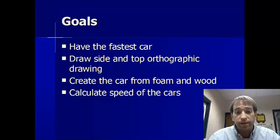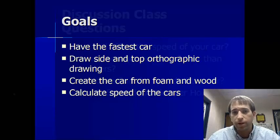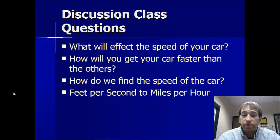We're going to do some science and some math with this. So the math part will be where you calculate the speed of the car. Some things we're going to discuss in class: What will affect the speed of your car? How will you get your car faster than the others? Because you're using the same wood, you're using the same CO2, you're using the same wheels, you're using the same axle. So how is your car going to be different than the others?